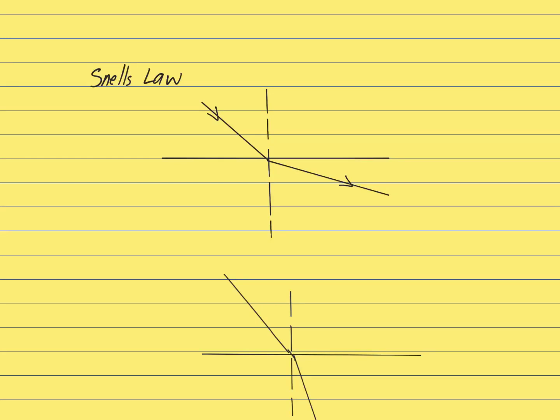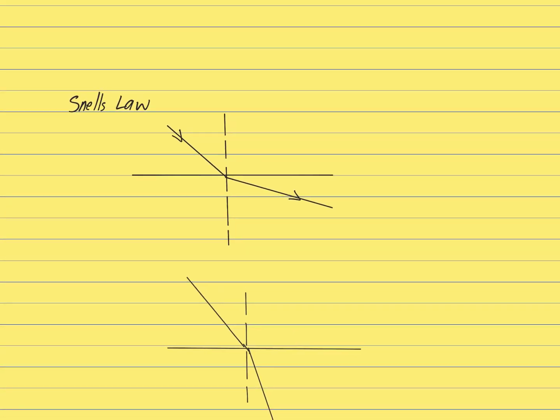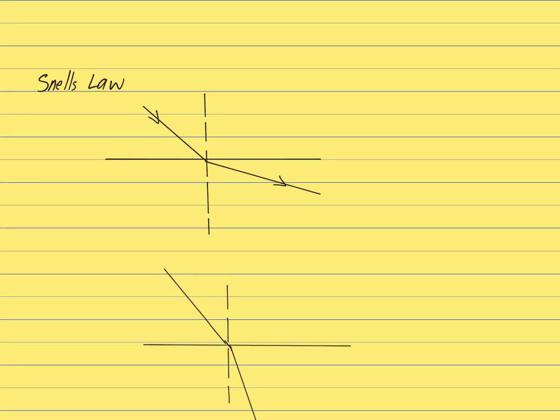Snell's law is a formula that's used to describe the relationship between the angle of incidence and the angle of refraction as light travels from one media to another. I'll show you what the formula is and then we'll define it.